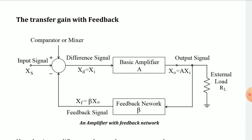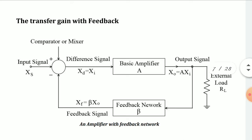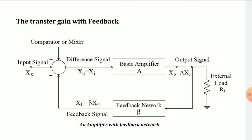We are dealing in terms of a generalized quantity X everywhere, because we are using a generalized concept for feedback. X could represent a voltage source or a current source — if voltage, replace X with V; if current, replace X with I. So we start with the input signal X_S applied to the mixer or comparator network.